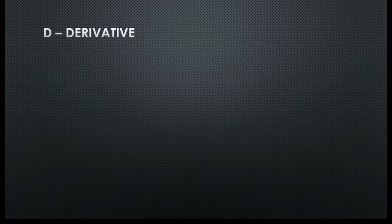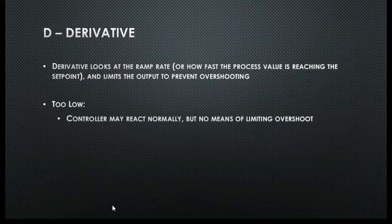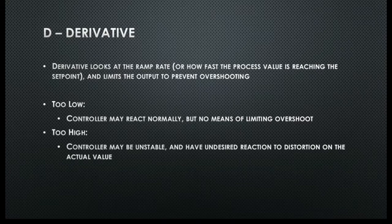Now for the third and final portion of our PID controller — the D, or derivative. The derivative is one of the most misunderstood parts of the PID controller. But when put simply, it is just looking at the ramp rate of the process value, and if it sees that it's going to be overshooting, then it pulls back on the output to try and prevent that overshoot. If the derivative is set too low, the controller may act normally as with a PI controller — but if you need a faster reaction and need to set the P and I higher, you have no way of limiting overshoot with too low a D value. If the derivative is set too high, the controller may become unstable and have an undesired reaction if there's any distortion on the loop that makes the ramp rate look faster than it is.